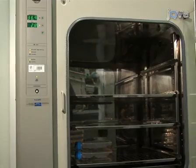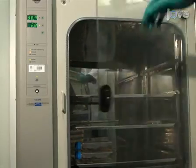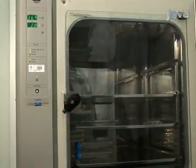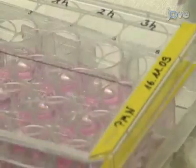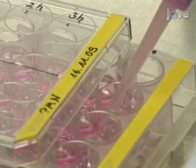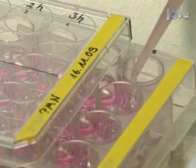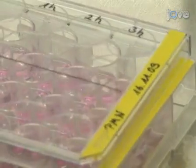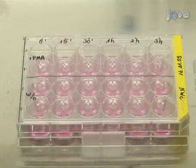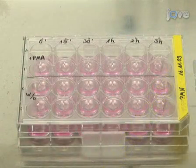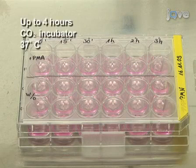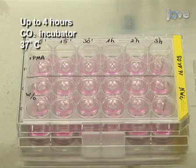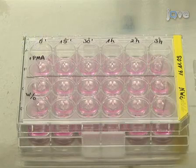For a time course experiment, add the stimulant sequentially, starting with the longest stimulation time. For each condition or time point, be sure to prepare a positive control by adding 600 nanomolars of PMA in RPMI. Also prepare a negative control by adding RPMI alone. Incubate for up to 4 hours in a CO2 incubator at 37 degrees Celsius.